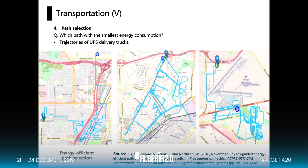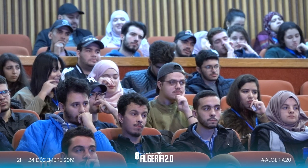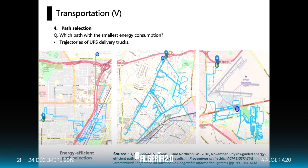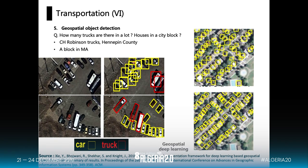United Parcel Services, a delivery company, can use spatial statistics techniques to develop the best energy-efficient delivery paths. This technique can be used in Algeria for delivery applications like Yassir Food or Jumia, to find the most efficient delivery times and routes. There are also AI and deep learning models in transportation to track the location of trucks in a city, and we can use this in Algeria as well.